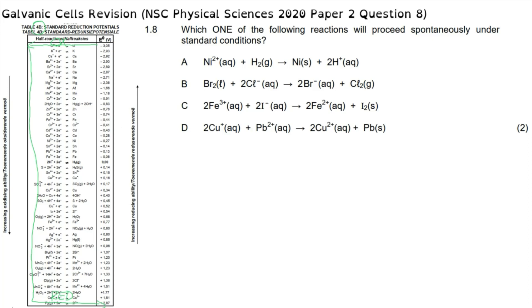Looking at option A, nickel goes from a charge of +2 to being neutral — that is a reduction half reaction when read from left to right on the table. The other half reaction is hydrogen going from H₂ to forming hydrogen ions, meaning the hydrogen half reaction is the oxidation half reaction. Because oxidation is occurring above reduction here, this is not a spontaneous reaction.